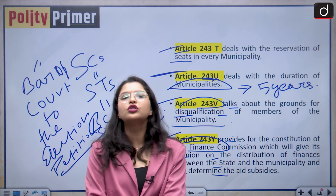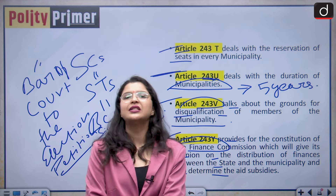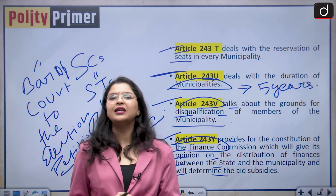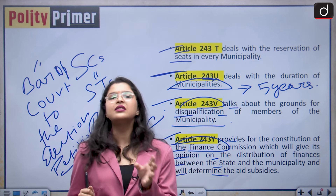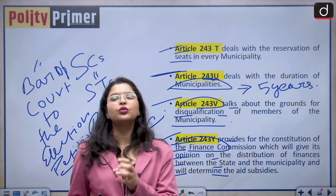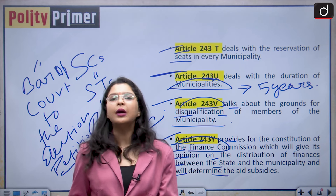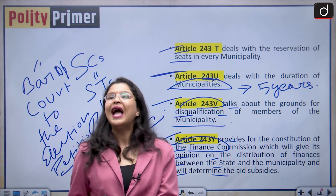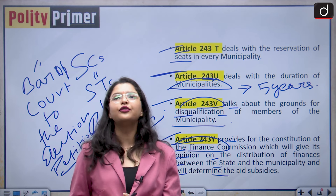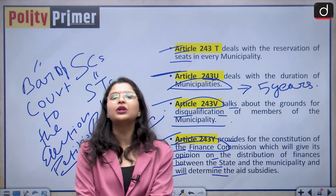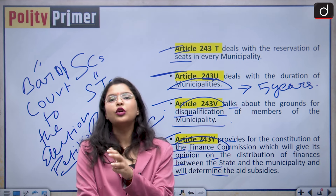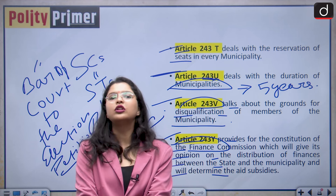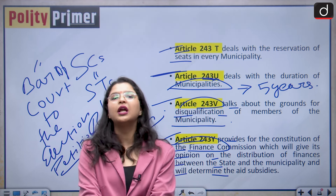You cannot directly approach the courts in India for challenging elections of Panchayats and municipalities. With this we come to a conclusion of our today's discussion. We have understood that decentralization was there in India since historic times, but we did not provide constitutional status to these institutions. After independence, various committees were constituted to look into the issue, and finally they all suggested that constitutional status should be given, leading to the 73rd and 74th constitutional amendment acts giving constitutional recognition to local self-government in India.